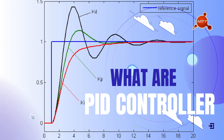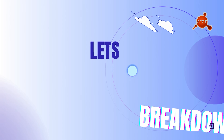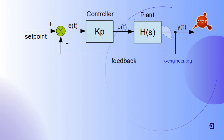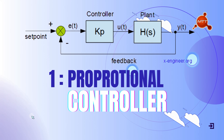One of the most popular and easy-to-use controllers is the PID controller. PID stands for Proportional, Integral, and Derivative. A PID controller combines these three elements to provide smooth and precise control over a system. The proportional component adjusts the input in proportion to the current error, which is the difference between the desired and actual output.